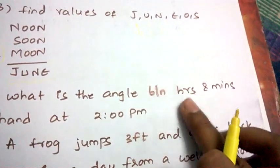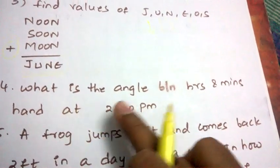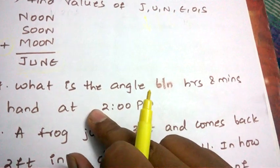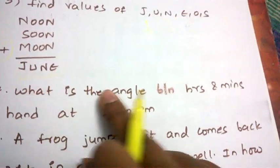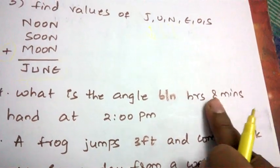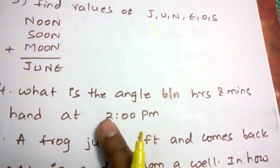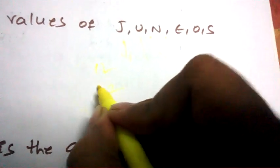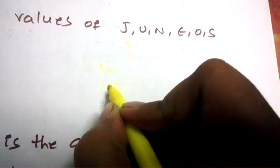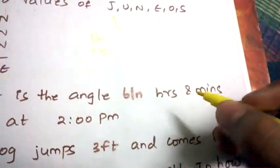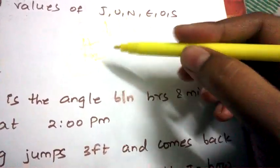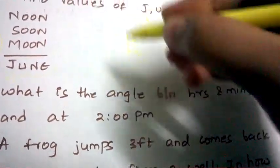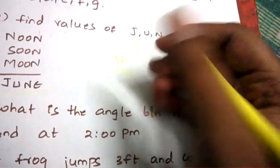The next question is: what is the angle between the hours hand and the minutes hand at 2 PM? At 2 PM the smaller hand will be at 2 and the bigger hand will be towards 12. You need to draw that, determine the angle, and solve it using the appropriate formula.